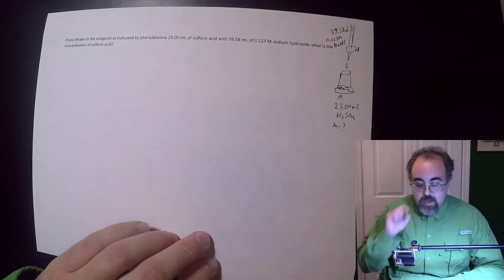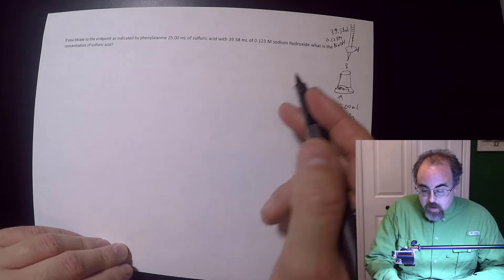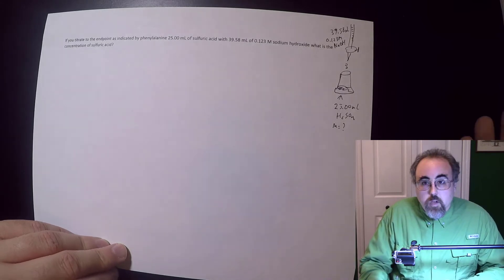And then we are titrating this with 39.58 milliliters of 0.123 molar NaOH. You put the base on top, and then the base reacts with the acid. So what is the concentration of sulfuric acid? That is what we're looking for.